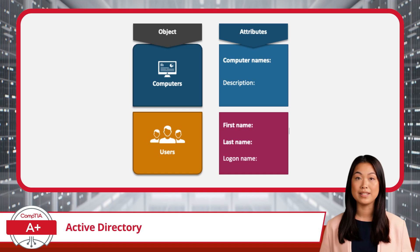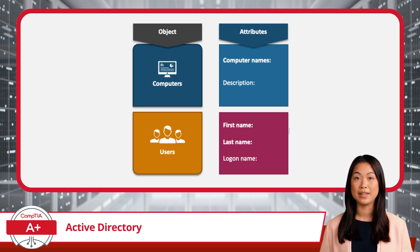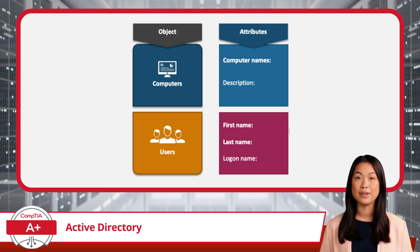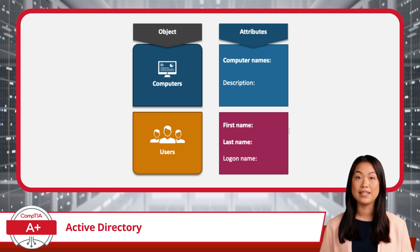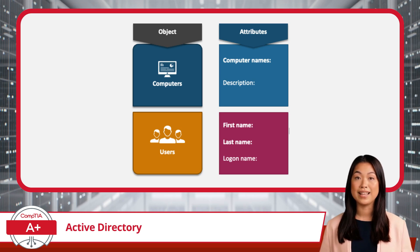Before diving into the specific components of Active Directory, it's important to understand the fundamental concepts of an object. In Active Directory, everything that can be managed within a network is considered an object. Objects include users, computers, printers, shared folders, and even security groups. Each object in Active Directory is represented in the directory as a unique entity with its own set of attributes, such as name, permissions, and other settings.